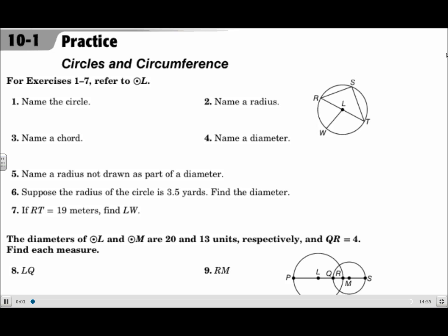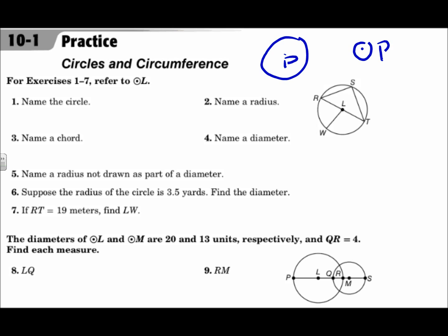This is lesson 101: Circles and Circumference. Your objectives are to identify and use parts of circles and to solve problems involving the circumference of a circle. A circle is named by its center, so if you have a circle with center point P, you will call that circle P — shown with a dot in the middle and the letter P.